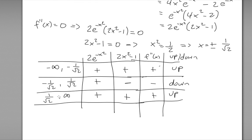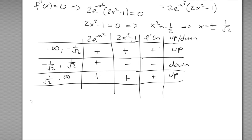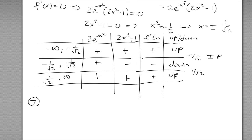Step seven: inflection points occur where concavity changes from up to down or down to up, as long as the function is continuous there. Our function is smooth everywhere. At x = -1/√2 the concavity changes from up to down, and at x = 1/√2 it changes from down to up — so both are inflection points.